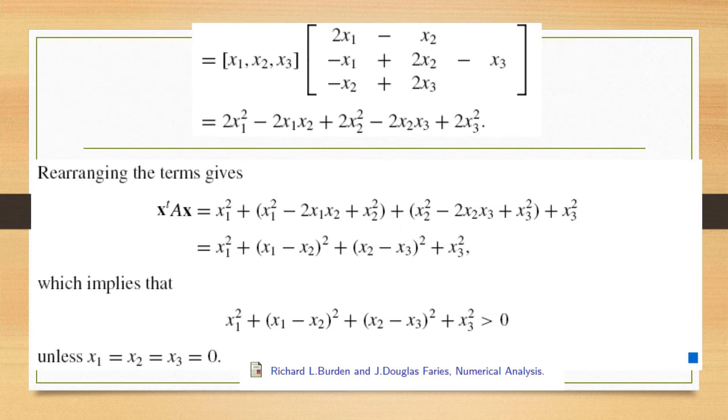We obtain a vector after multiplying the matrix with a vector. Now we multiply this row vector with this column vector and we obtain this entry. This is one entry.